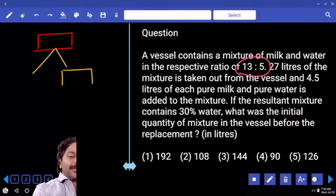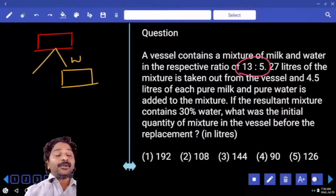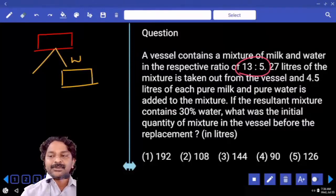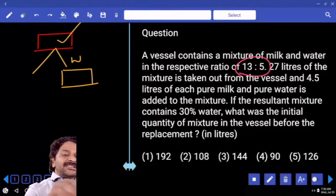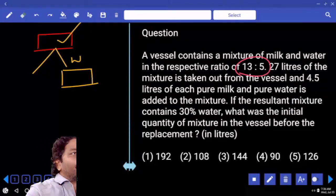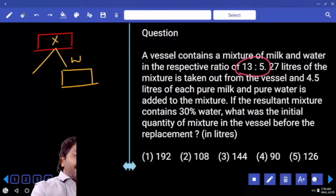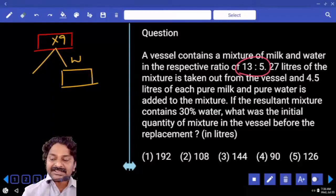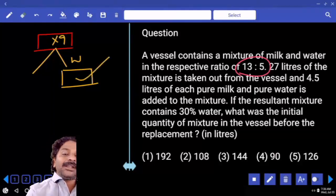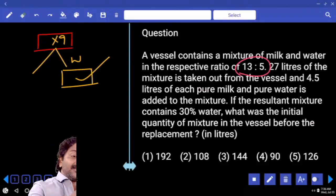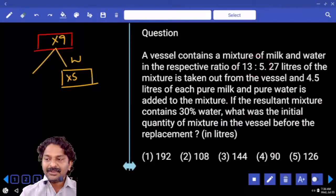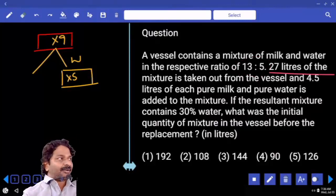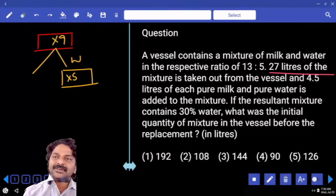Now here they are talking about water quantity. If you want to divide total component into 13:5, which is 18 parts, this number should be a multiple of 18. Can we write it as a 9 multiple? Now that is divided in the ratio 13:5. So water component, how many parts? That should be a multiple of 5. It is a 5 multiple. 27 liters quantity is taken out. Even in that case also it has to be in the same ratio.